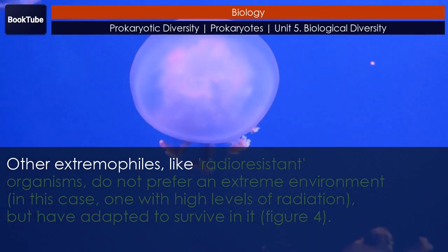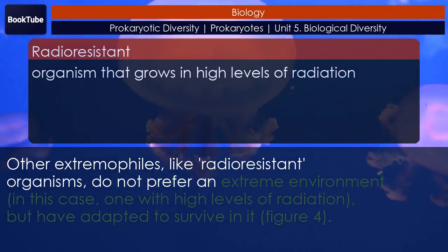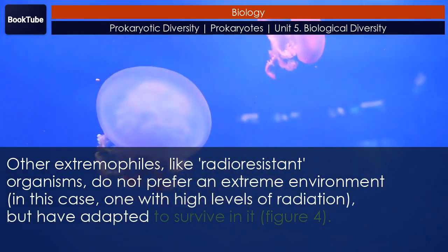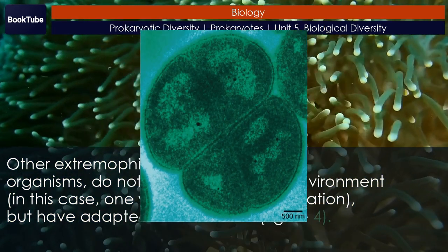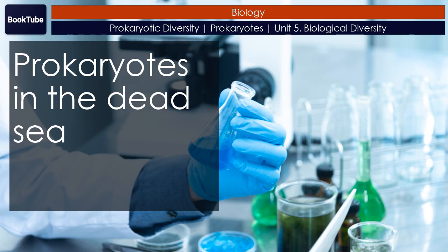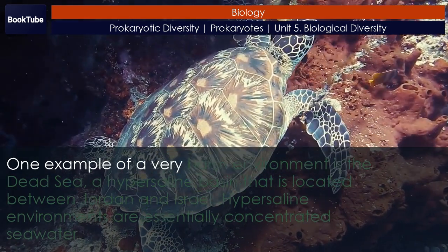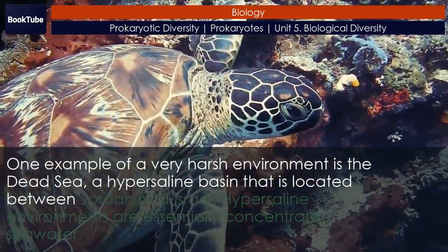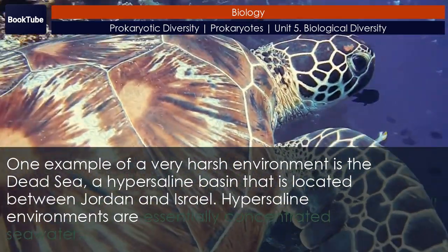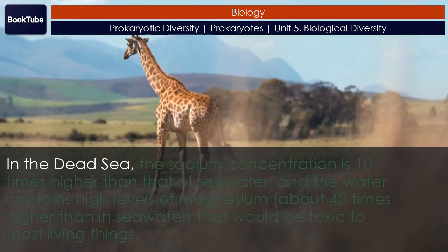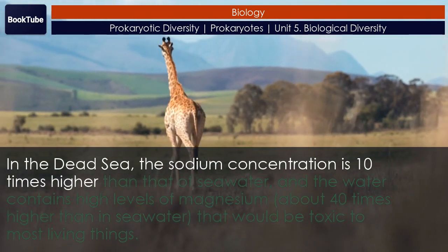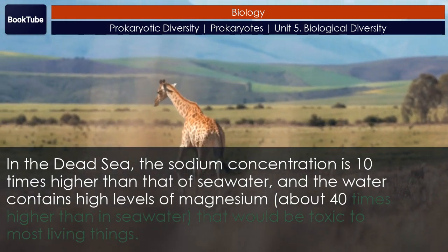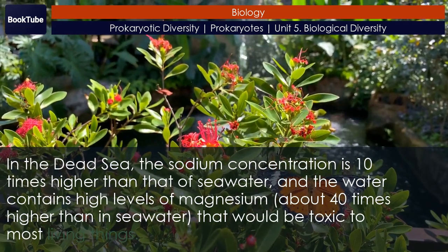Prokaryotes in the Dead Sea. One example of a very harsh environment is the Dead Sea (Figure 4) — a hypersaline basin located between Jordan and Israel. Hypersaline environments are essentially concentrated seawater. In the Dead Sea, the sodium concentration is 10 times higher than that of seawater, and the water contains high levels of magnesium — about 40 times higher than in seawater — which would be toxic to most living things.